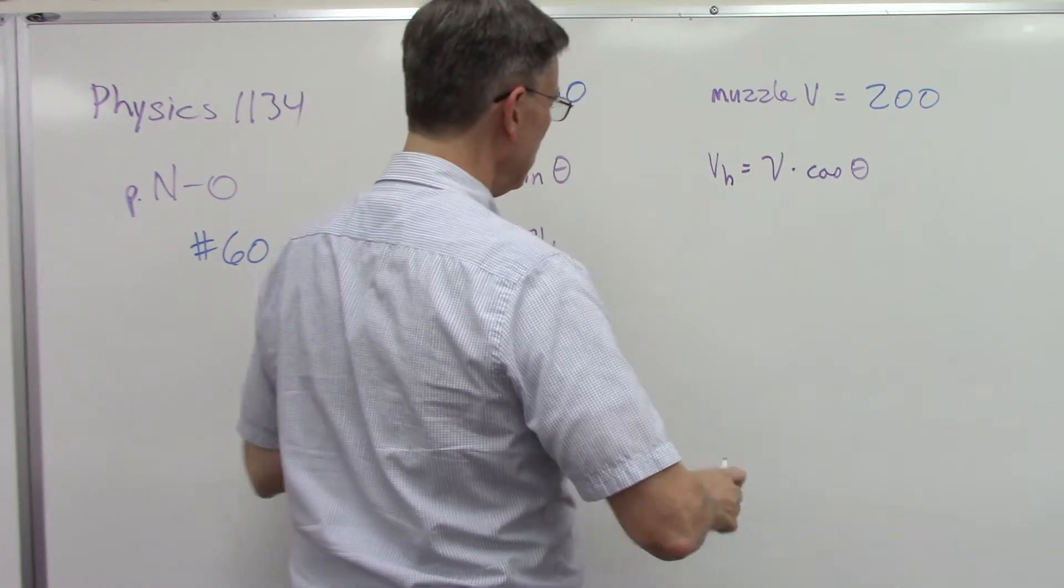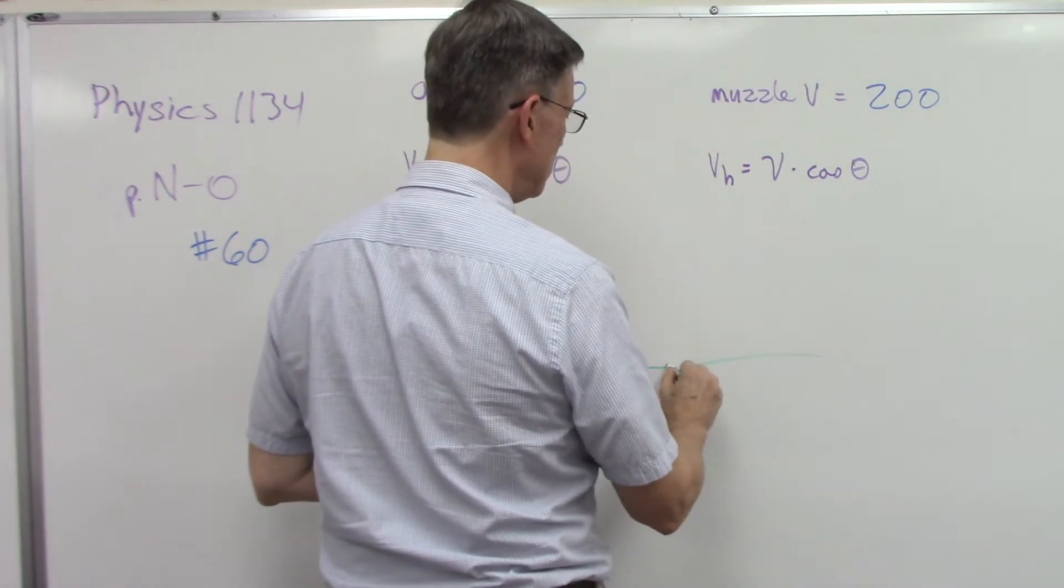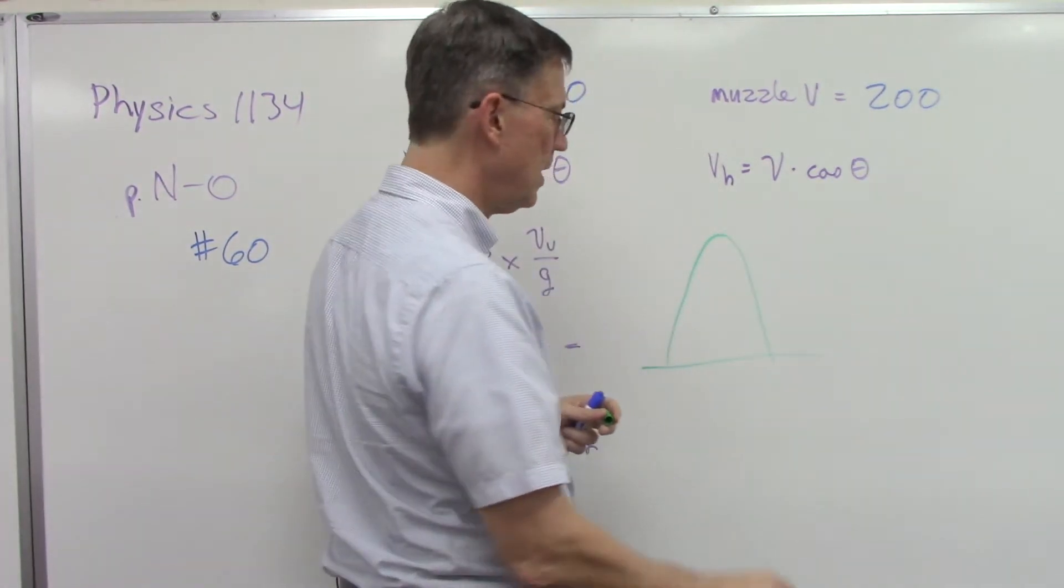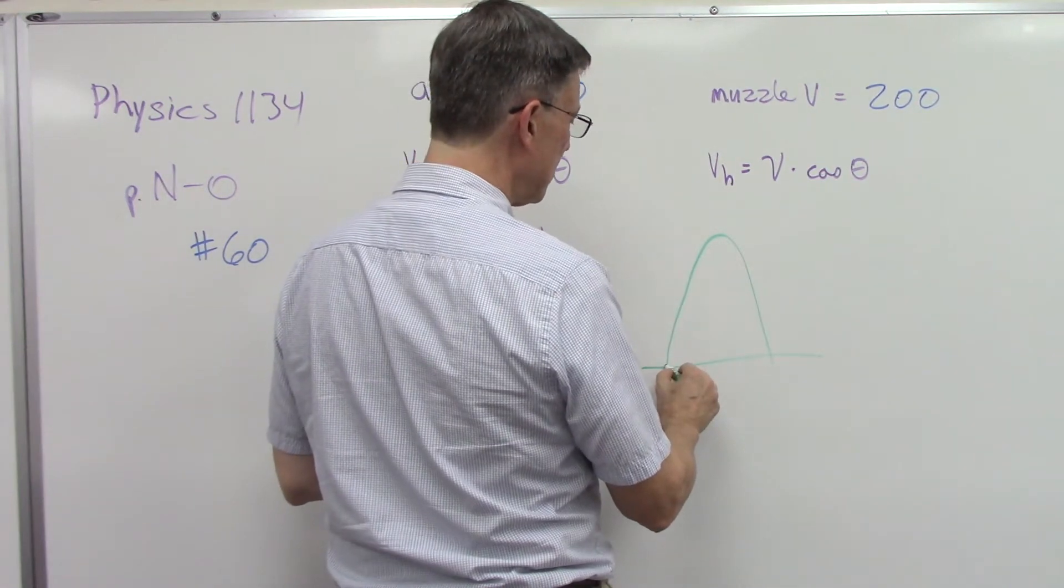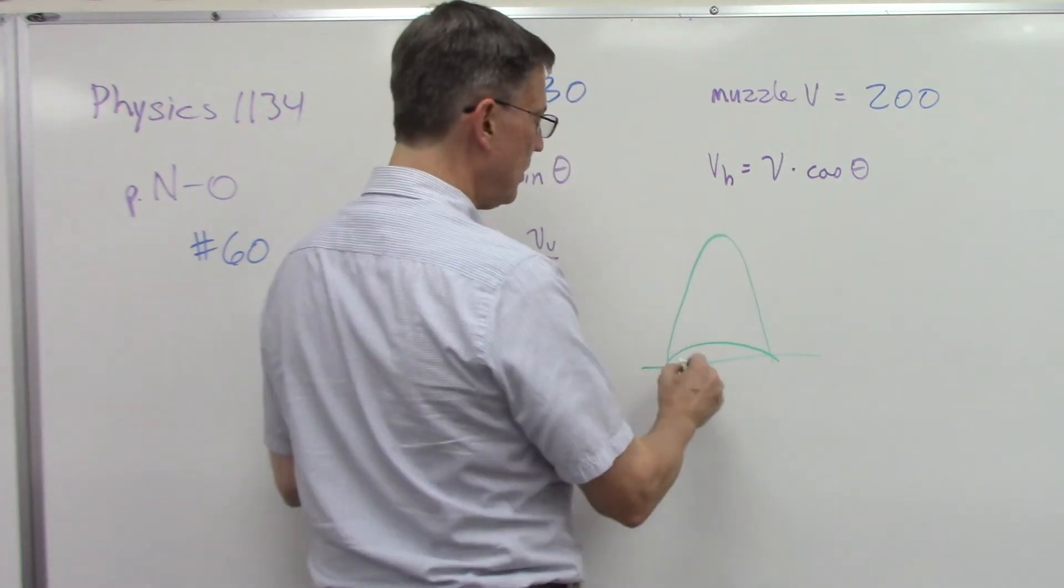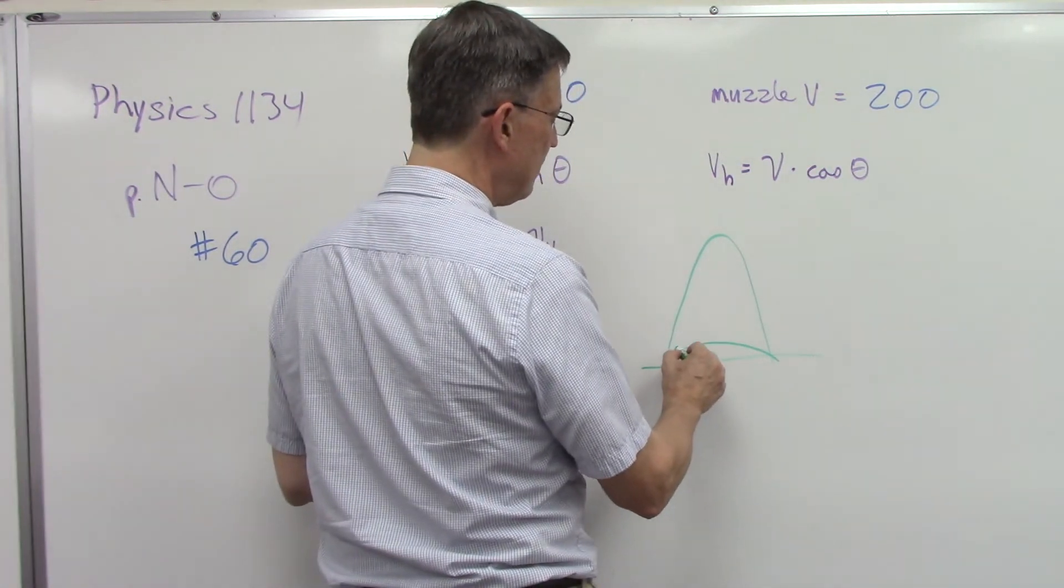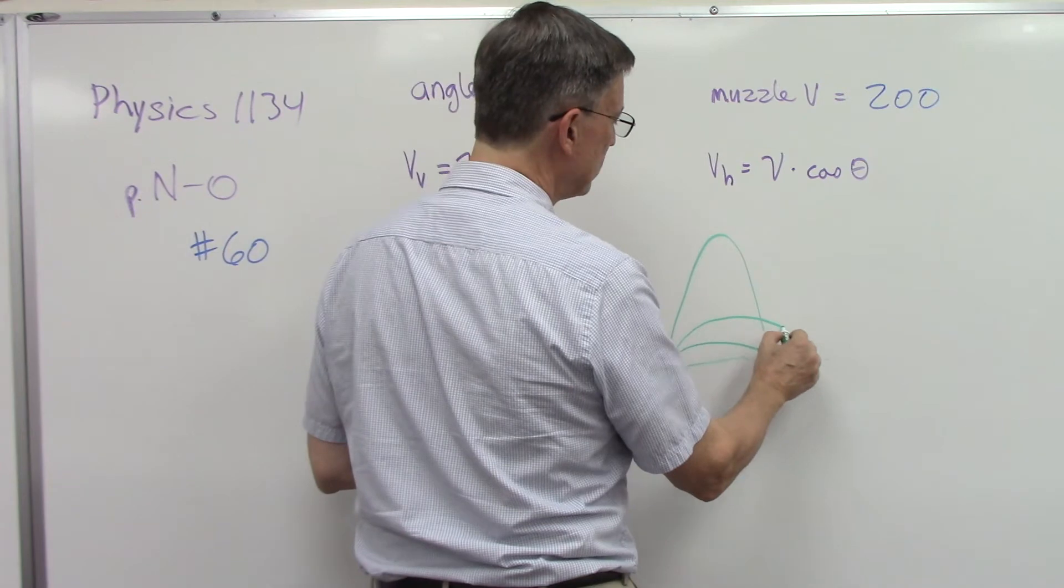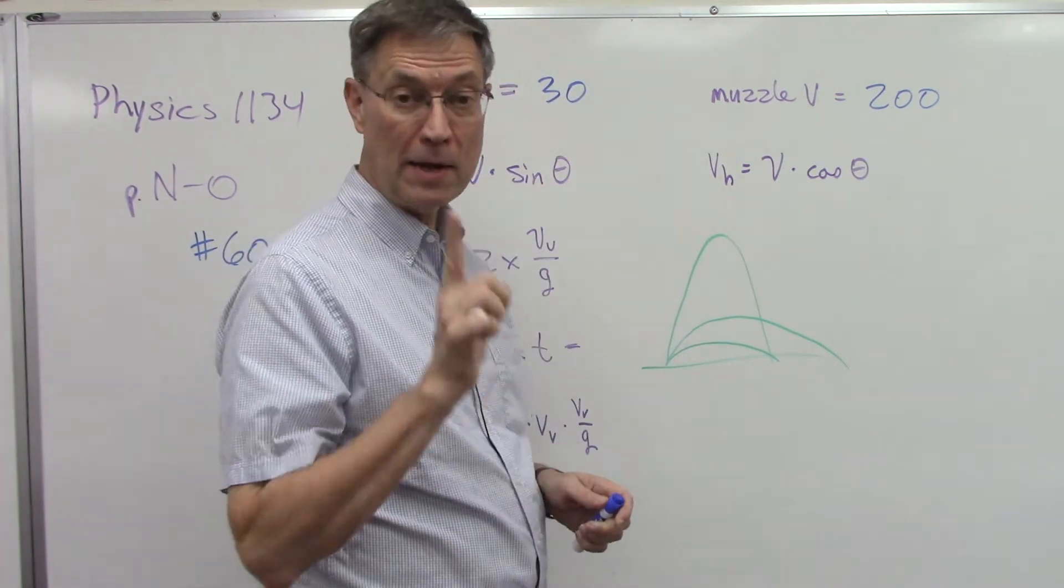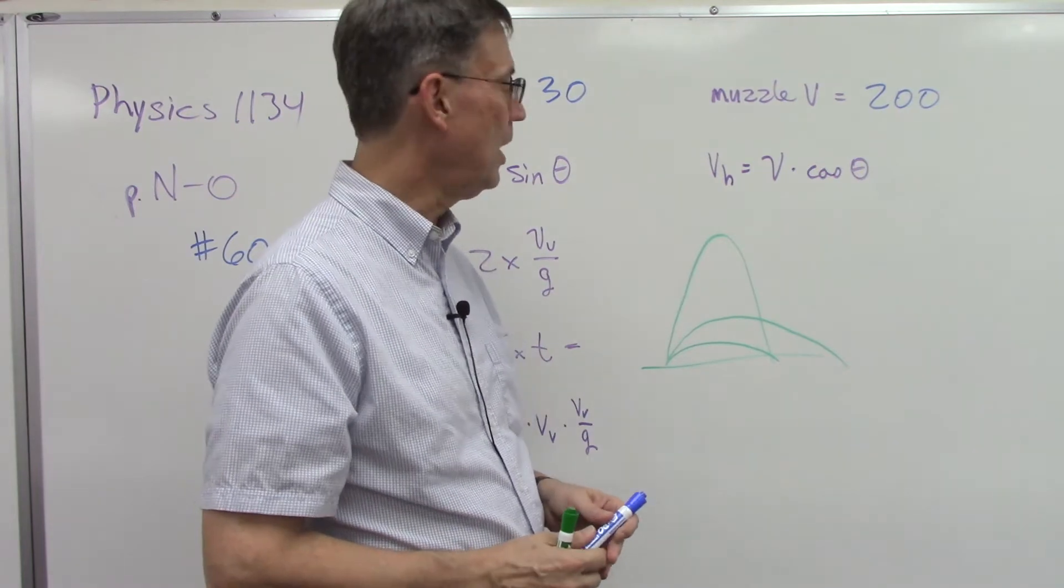If you're trying to get the ball to go the furthest down the field possible, you don't want to kick it high. Because from what we learned in these previous pages, the higher you kick it, it's going to go up and then come right back down. And if you don't kick it very high, it's also not going to go very far. The book points out that a 45 degree angle will actually get it the furthest down the field. So there's a practical application of physics to real life.